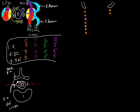We need 12 thoracic vertebrae: T1, 2, 3, 4, 5, T6, 7, 8, 9, 10, 11, 12. And now five lumbar vertebrae: L1, 2, 3, 4, 5 — spread out a bit more because the lumbar vertebrae get much thicker in the bottom region. And then S1, 2, 3, 4, and 5.